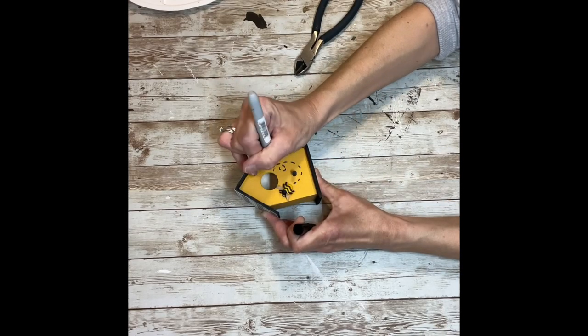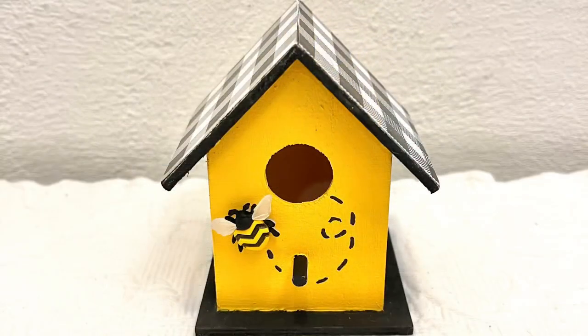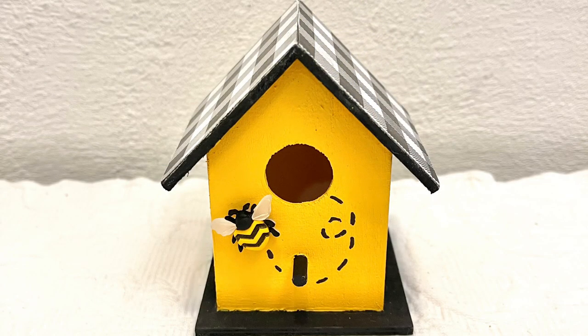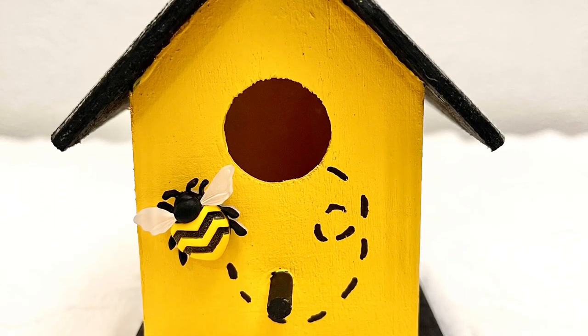Once I have that all drawn out, this little birdhouse is all done. This would look super cute sitting in a tiered tray or just on a shelf. You could put a little Spanish moss in the hole if you'd like to. I just think this turned out absolutely adorable.